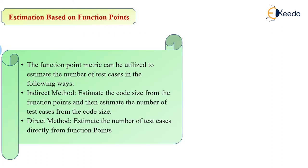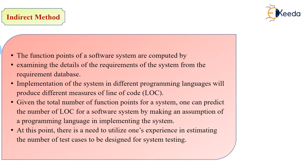Function points can be used to estimate test cases by two methods. The indirect method estimates code size from function points and then estimates test cases from code size. Function points are computed by examining the requirement details from the database, then implemented using programming languages to produce LOC. The total function points for a system can predict the number of LOC for the software system. Experience is needed to estimate the number of test cases to be designed.